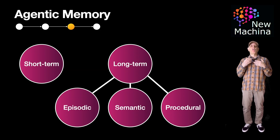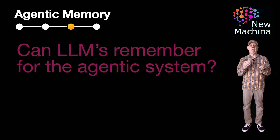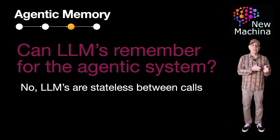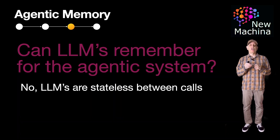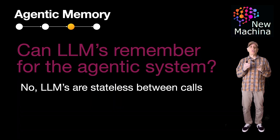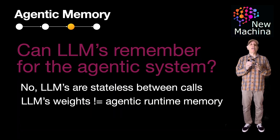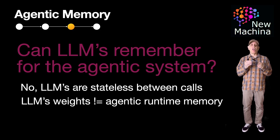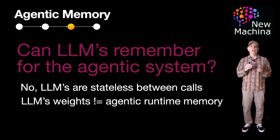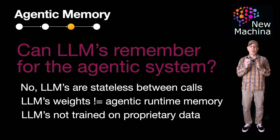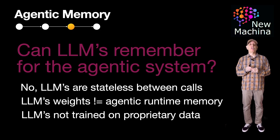So going back to the question asked earlier in the video — can't the LLM remember all this for the agentic system? Well, the answer is no. LLMs themselves are stateless between interactions, meaning they do not retain state for the agentic system. Additionally, LLMs do store knowledge in their weights, but this does not equate to agentic runtime memory. These LLM weights were encoded with knowledge during training and are fixed once the LLM is released to production. Additionally, LLMs are not trained with your company's proprietary information, so this is yet another reason LLMs can't provide memory for your agentic system.